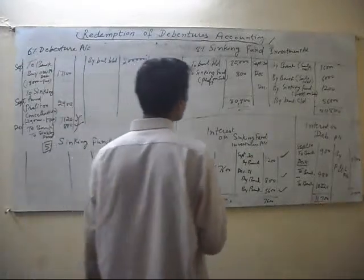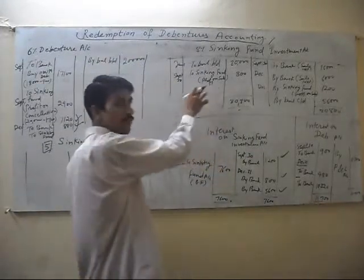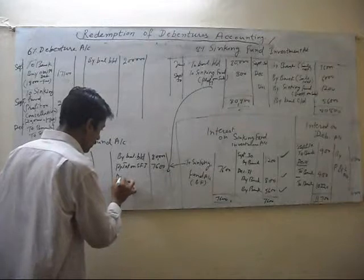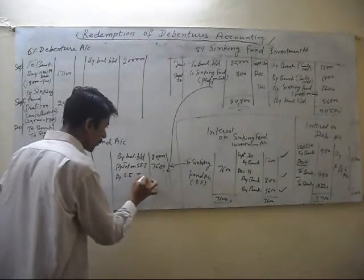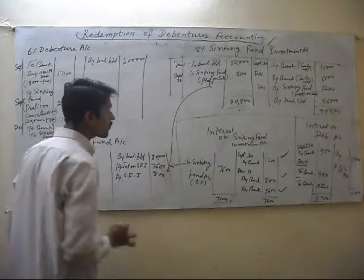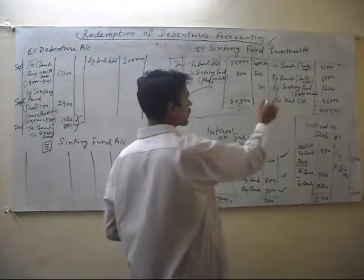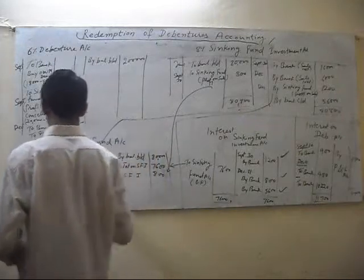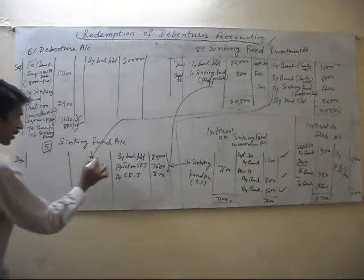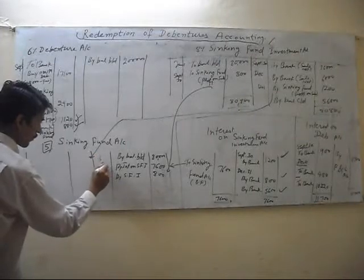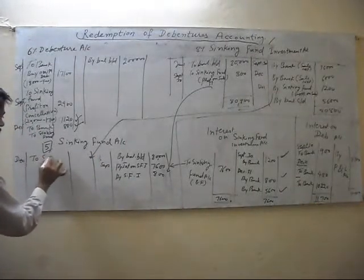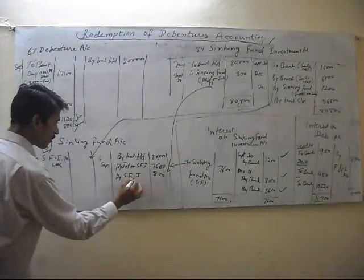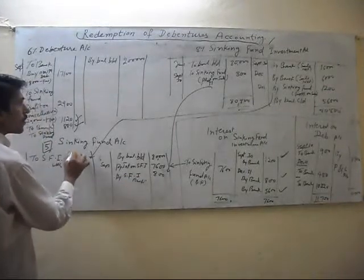We also transfer profit on the sale of sinking fund — by Sinking Fund Investment Account — the figure is 800. We also transfer loss on the sale of sinking fund to the debit side of this account — to Sinking Fund Investment Account. The loss is 1,200 and the profit on sale is 800.